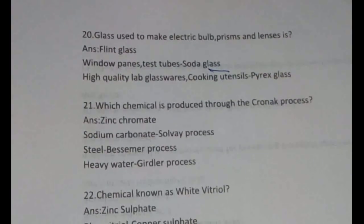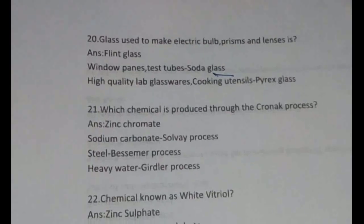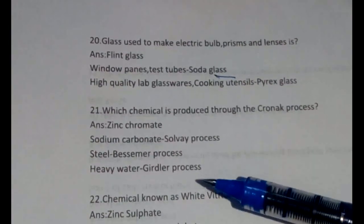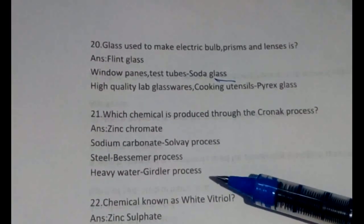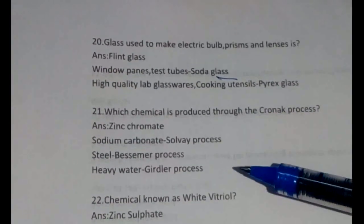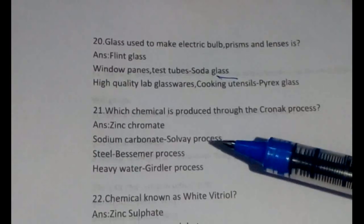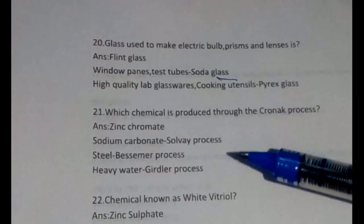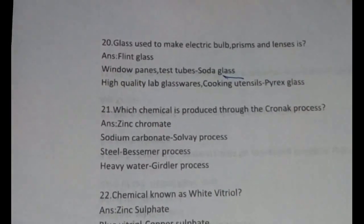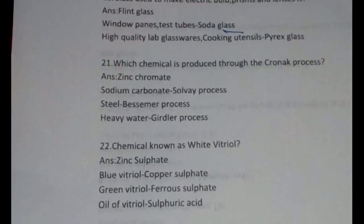Which chemical is produced through the chromic process? It is zinc chromate. Sodium carbonate is produced by the Solvay process. Steel is made by the Bessemer process. Heavy water is produced by the Girdler process. These names of processes are very important — Pondicherry University usually asks questions on these.